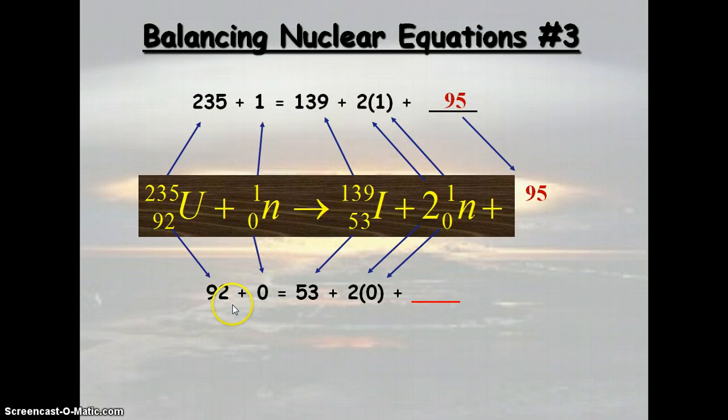Now on this side, we have 92 plus 0, that's 92, equals 53 plus 2 times 0. So that's just 0. So what plus 53 gives us 92? That'd be 39. So we know our atomic number is 39.